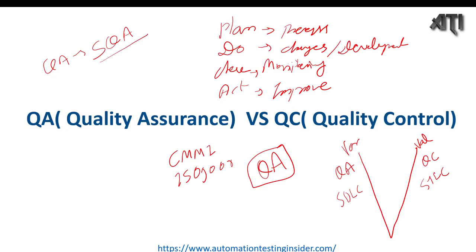QA teams prepare templates — we cannot use any template without certification; it must follow the proper process. For example, a test case summary document, test case authoring document, test cases document, or test plan must all be certified by QA. In CMMI there are five stages: Initial, Repeatable, Defined, Managed, and Optimizing.